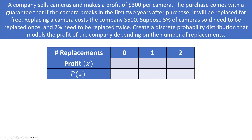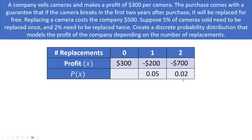If there are zero replacements, profit = $300. If one replacement: $300 − $500 = −$200 (a net loss). If two replacements: $300 − $500 − $500 = −$700. The probabilities are: P(1 replacement) = 0.05, P(2 replacements) = 0.02, and the remaining P(0 replacements) = 0.93, so all three probabilities sum to 1.